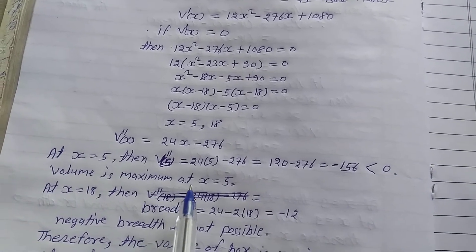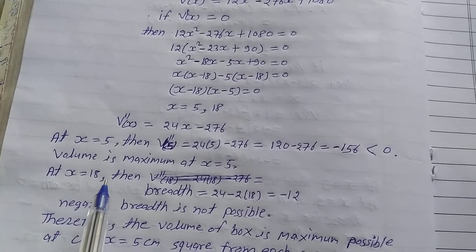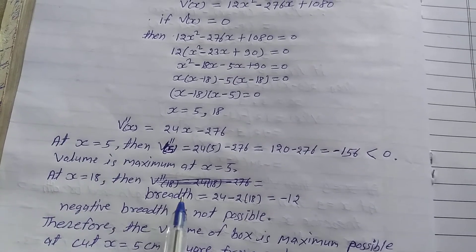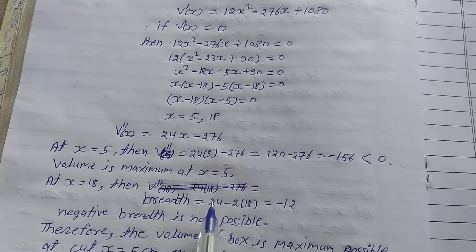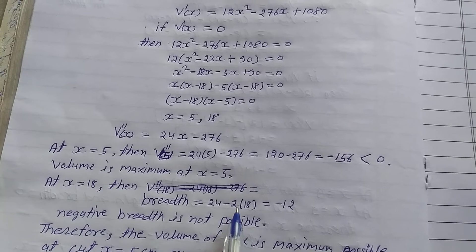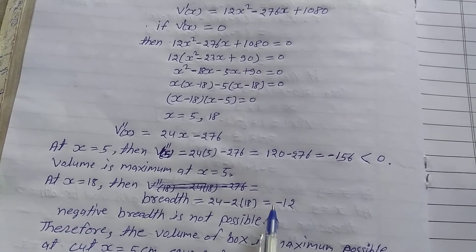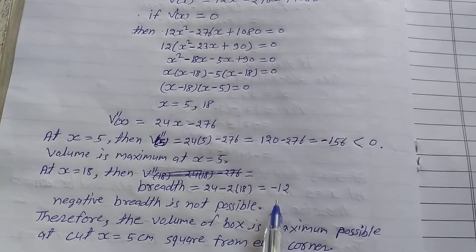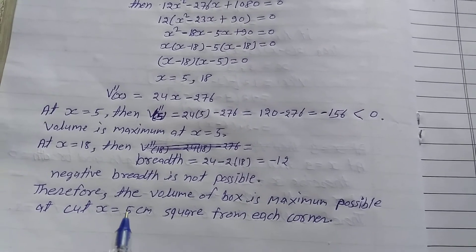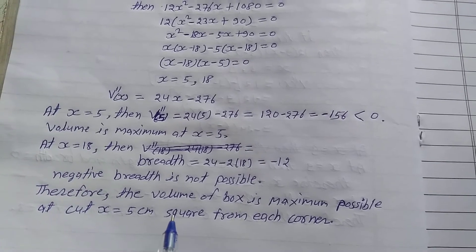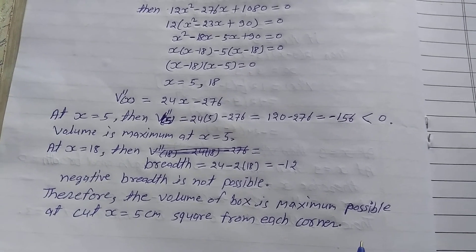So volume is maximum at x equals 5. At x equals 18, the width would be 24 minus 2 times 18, which equals minus 12, which is not possible since width cannot be negative. Therefore the volume of the box is maximum when the square cut from each corner has side equal to 5 cm.